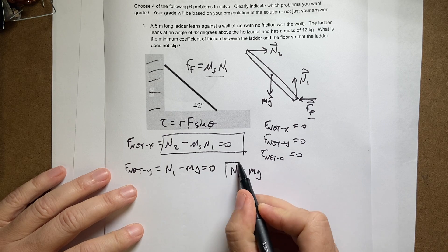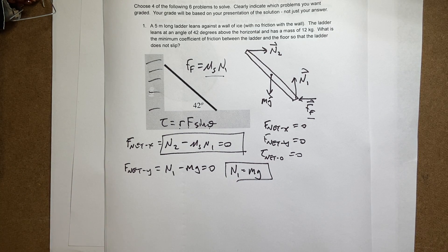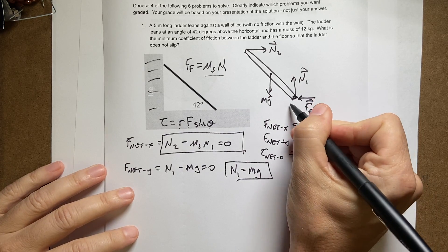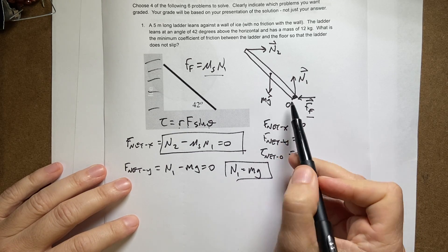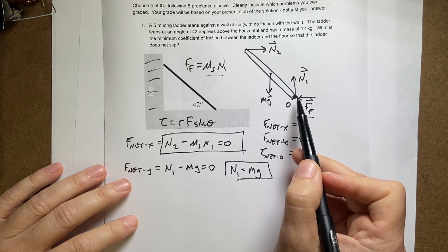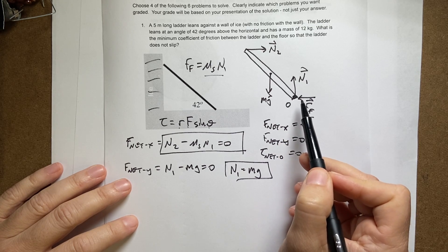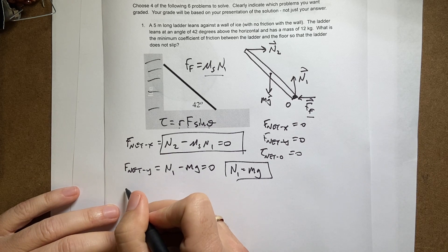Now, the torque equation. For this, we're going to have to pick a point about which to calculate the torques. And it doesn't matter. You'll get the same answer, but it will be easier in certain ways. So I'm going to pick this point down here, O. Why do I pick that point? At that point, I have two forces that pass through the point about which I calculate torques. So neither of these two forces will have a torque because the torque arm R is zero. So they're gone.